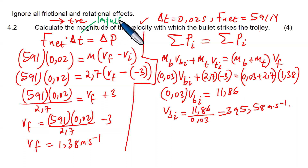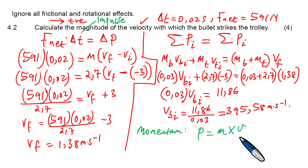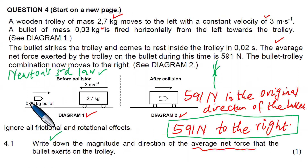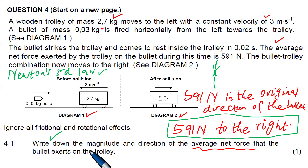Momentum is the product of mass and velocity — multiply them together and you get momentum. In this collision, the trolley was moving towards the left and the bullet towards the right. After collision, the trolley changes direction and moves in the original direction of the bullet. These are the kinds of things that pertain to momentum.